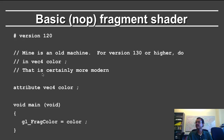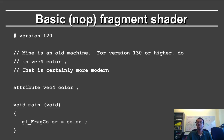Here is the fragment shader. Again, 'attribute' should probably be replaced with 'varying' on the Mac — the skeletons are correct. In other cases you might want to use 'in' and 'out'. Essentially it is a no-op, where it just sets gl_FragColor — again a specific built-in variable for the color of the fragment — equal to the color passed in from the vertex shader. This shows the basics of how you pass an argument from the vertex shader to the fragment shader.